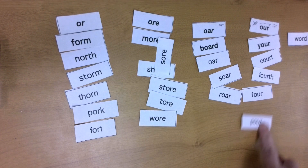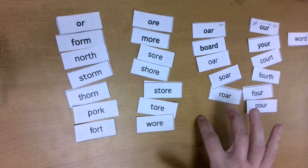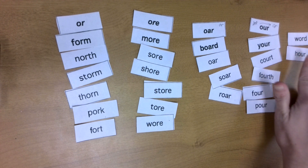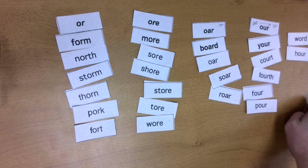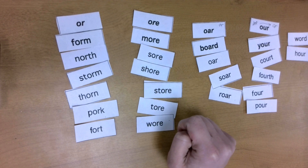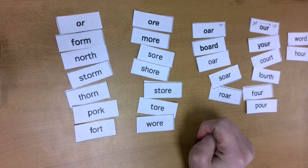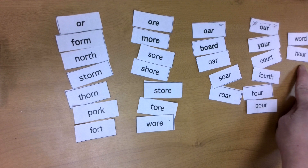Our next word is HOUR — like it'll take us about an hour to get there. Go ahead and tap that out with me. That doesn't follow any of our sounds, so this one is also an oddball. Even though O-U followed by an R normally makes the OR sound, HOUR actually makes that 'ow' sound — it's super uncommon. There's also a silent H in that word — an extra tricky word to spell.